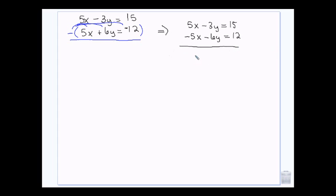Then those X's will go away. Negative 3 and negative 6 is negative 9. 15 and 12 is 27. Divide by negative 9, and I get negative 3. Then I come back to either of these original ones.